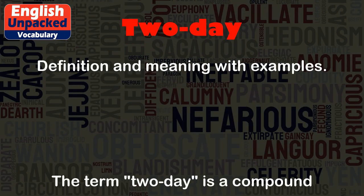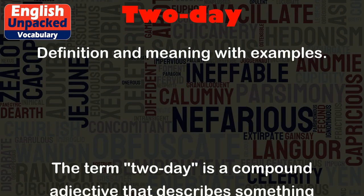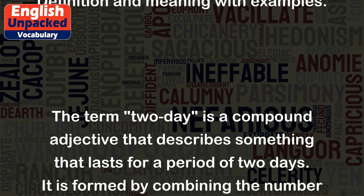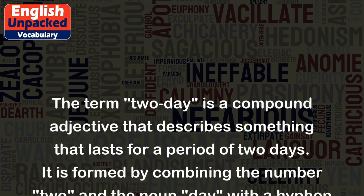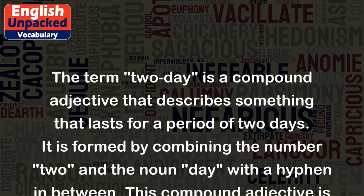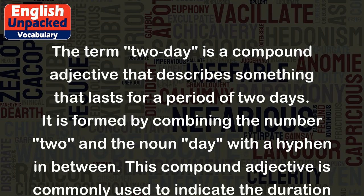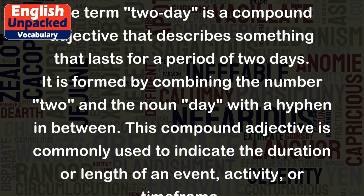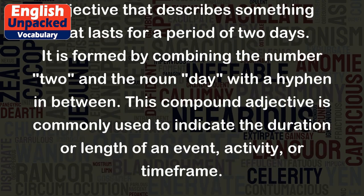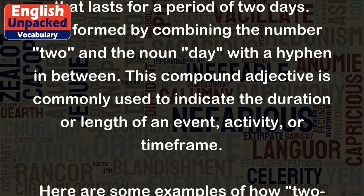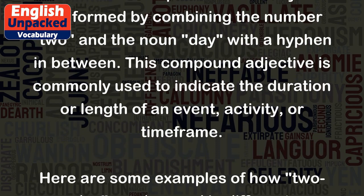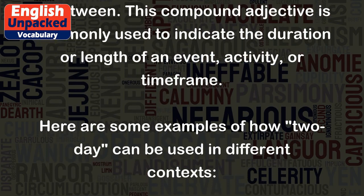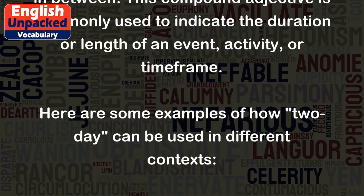The term 'two-day' is a compound adjective that describes something that lasts for a period of two days. It is formed by combining the number two and the noun day with a hyphen in between. This compound adjective is commonly used to indicate the duration or length of an event, activity, or time frame.